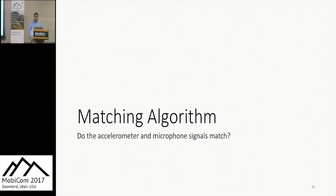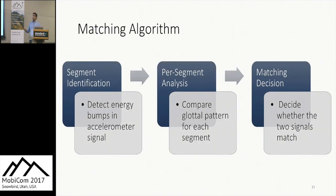The cornerstone of V-Auth is the matching algorithm, which answers a basic question: do the accelerometer signals collected from your body match the microphone signal collected by the voice assistant? This matching happens in three stages: the segment identification stage, the segment analysis stage, and the matching decision stage.